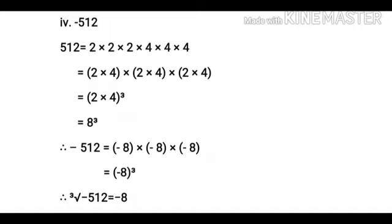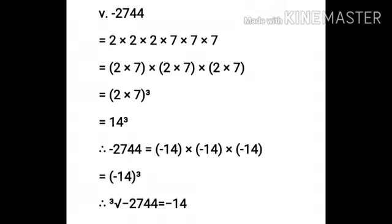In sum number 4, we have to find the cube root of minus 512. First, let us find the factors of 512. The number 512 is equal to 8 cube. Therefore, minus 512 will be equal to minus 8 cube. Therefore, the cube root of minus 512 is equal to minus 8.